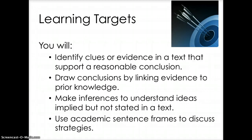Yesterday we looked at making inferences and drawing conclusions by looking at a picture — the picture of the cowboy. We figured out he was wearing a cowboy hat, boots, and spurs, and he had that long handlebar mustache, a magnifying glass, and a map. We made inferences from what he was doing and then drew the conclusion that he was looking at the fine print on his contract.